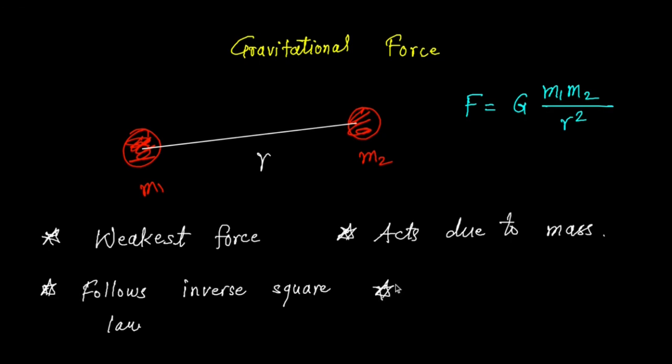The range of gravitational force must be infinite, because we cannot think of distances over which it doesn't act. It acts between the moon and earth — the distance is very large. It acts between the sun and earth — the distance is even larger, very very large. So the range of this force must be infinite.